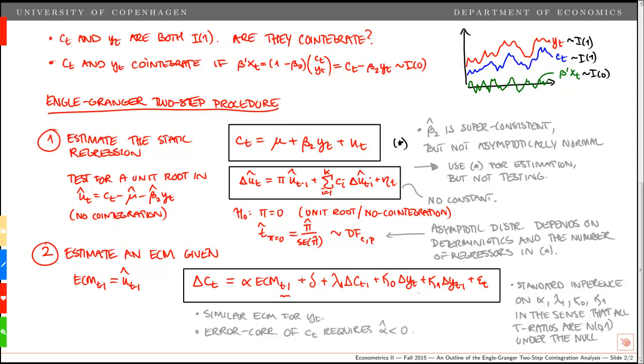If ct and yt are i1, the first difference will be i0, so they will be stationary. When we do inference on this parameter, say lambda 1, it is a coefficient to a stationary variable, and that implies that we can do standard inference. The same applies to alpha here, because under cointegration, the ECM term, the correction term, will be stationary. All deviations from the long-run equilibrium value are stationary, and that implies that alpha is also a coefficient to a stationary term. So we can do standard inference on alpha.